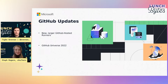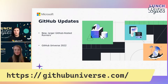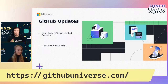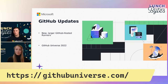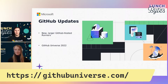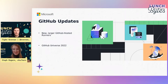On the GitHub side: Actions is introducing new larger GitHub-hosted runners in beta, scaling from 2 to 64 cores for much better performance on large builds. You can change the runner size with a single line in your workflow file, with concurrency of up to 500 parallel machines — you can register now for the public beta. Also, GitHub Universe 2022 is on November 9th and 10th in San Francisco and virtually — register at the link shown.